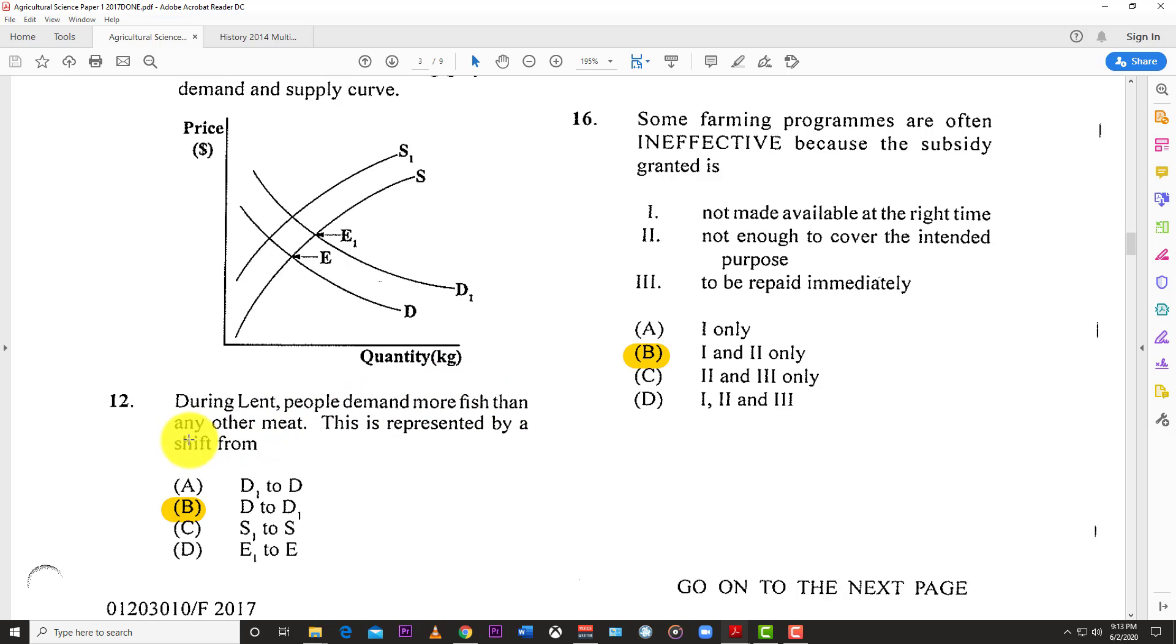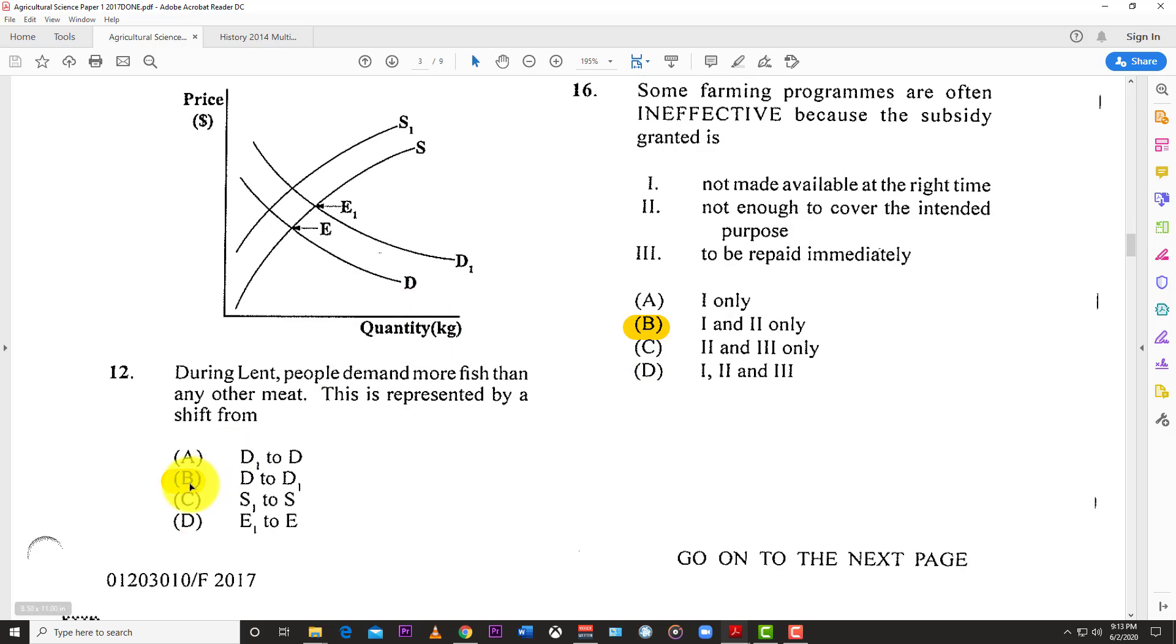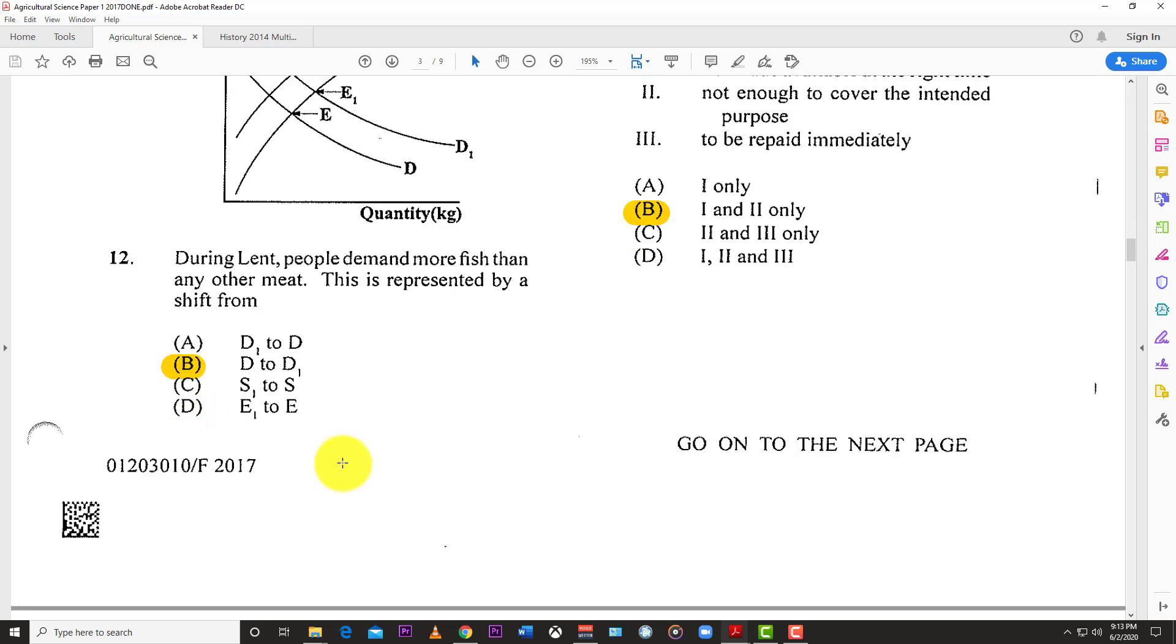Number twelve refers to this supply and demand graph. During Lent, people demand more fish than any other meat. This is represented by a shift from D to D1. That represents an increase in the demand.